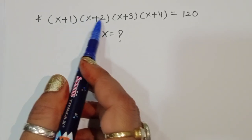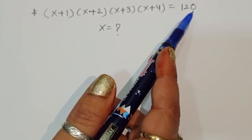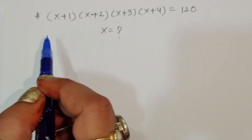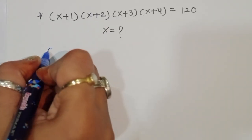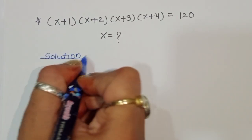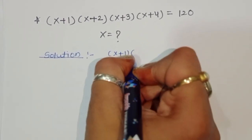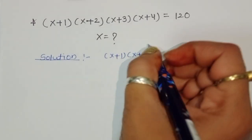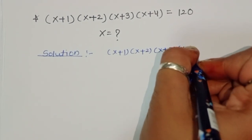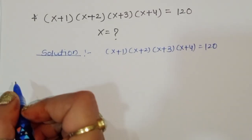Given: (x+1)(x+2)(x+3)(x+4) = 120. We have to find out the value of x here. Let's see the solution.